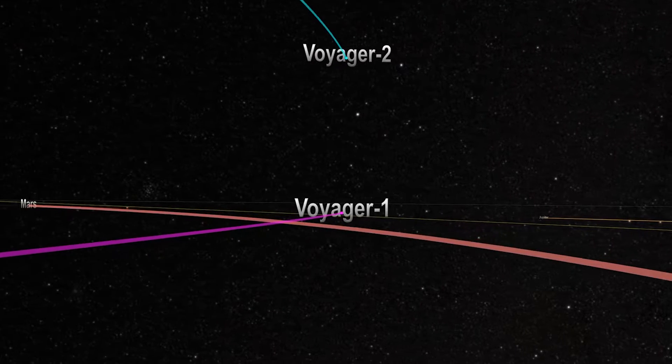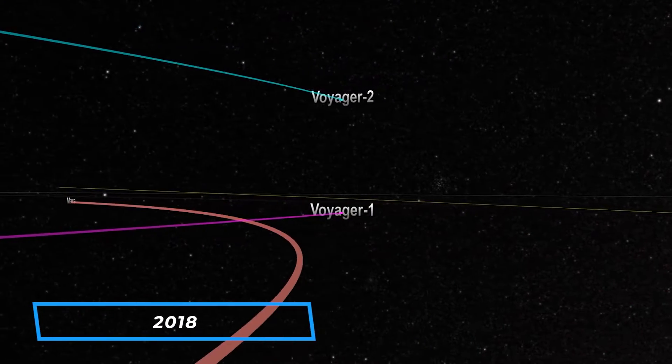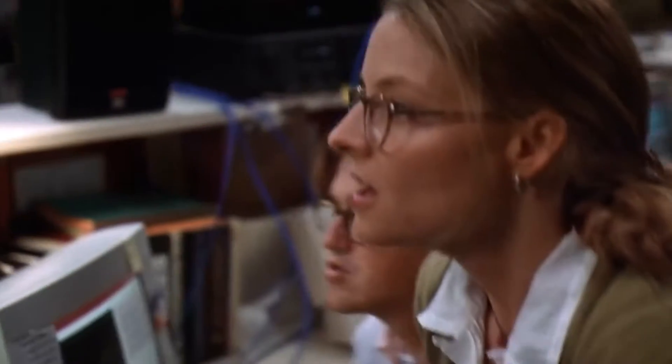Remarkably, Voyager 1, along with its twin Voyager 2, which reached interstellar space in 2018, is not only still operational but continues to transmit valuable scientific data.